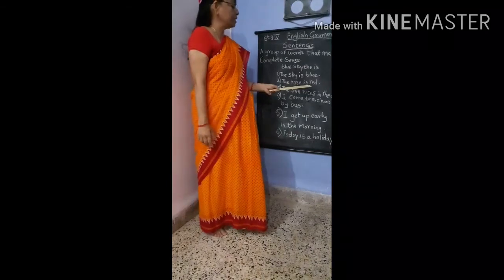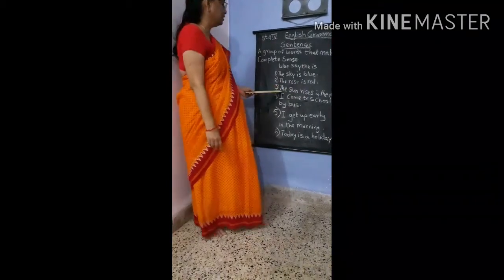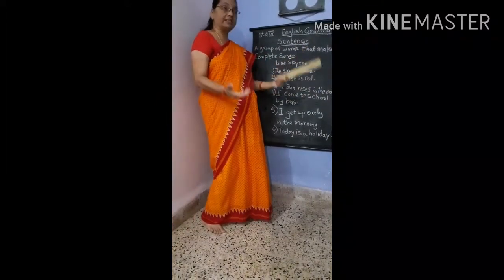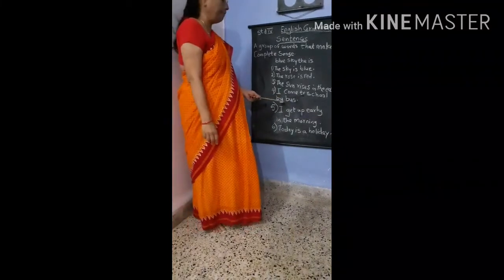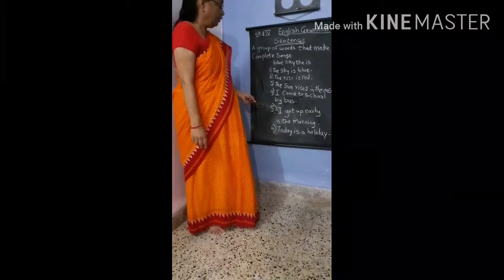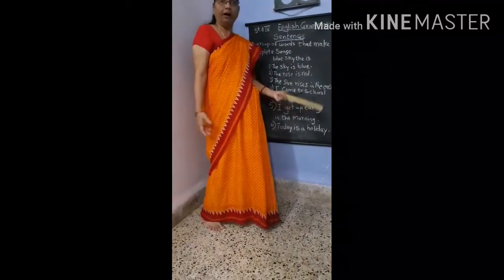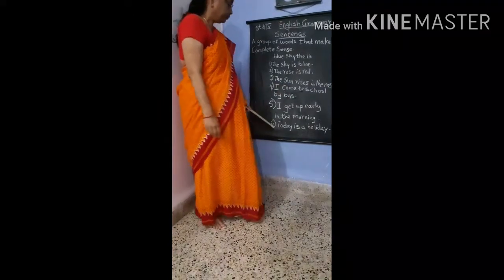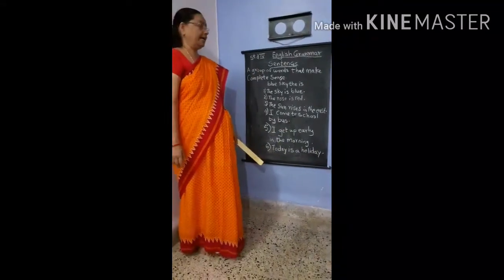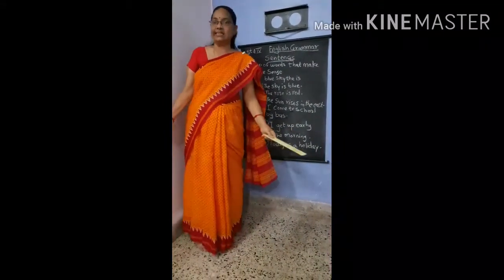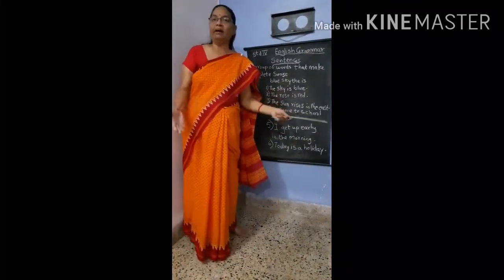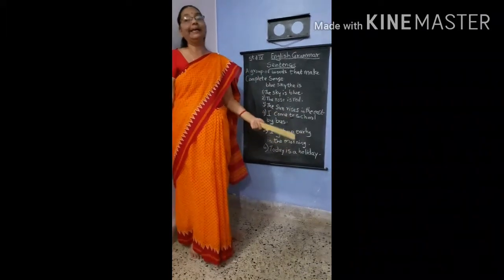Second sentence: 'The rose is red' — here also complete sense. Third: 'The sun rises in the east.' Fourth: 'I come to school by bus.' Fifth: 'I get up early in the morning' — this also makes complete sense. 'Today is a holiday.' So these are known as sentences — this group of words all make complete sense.